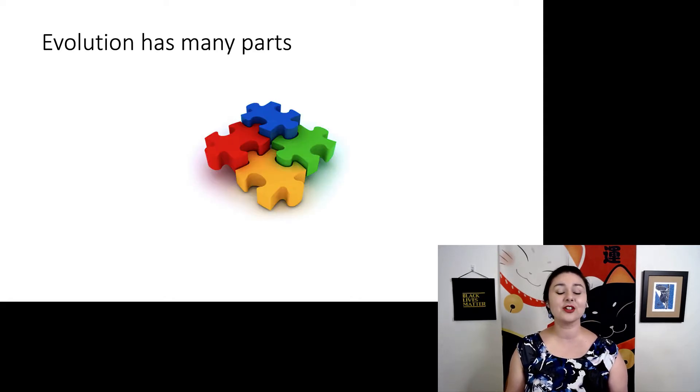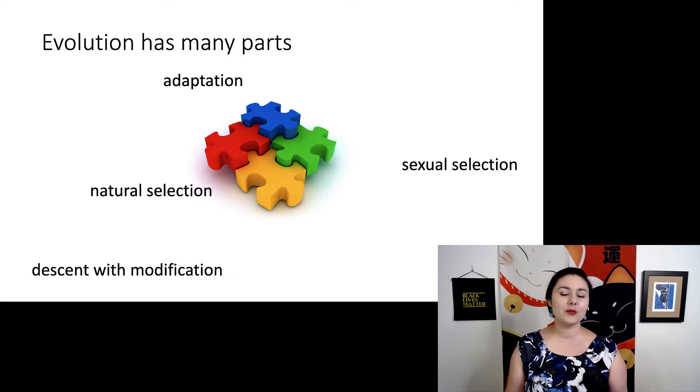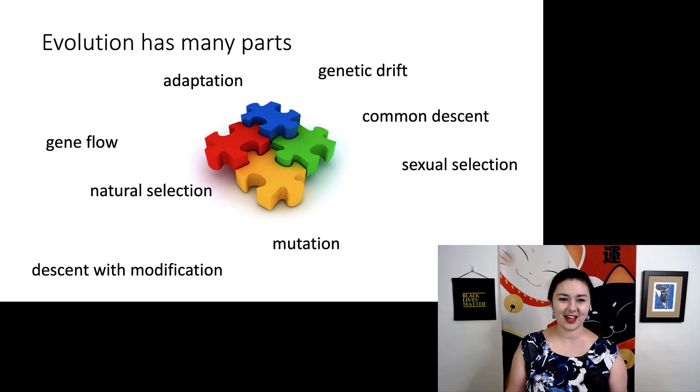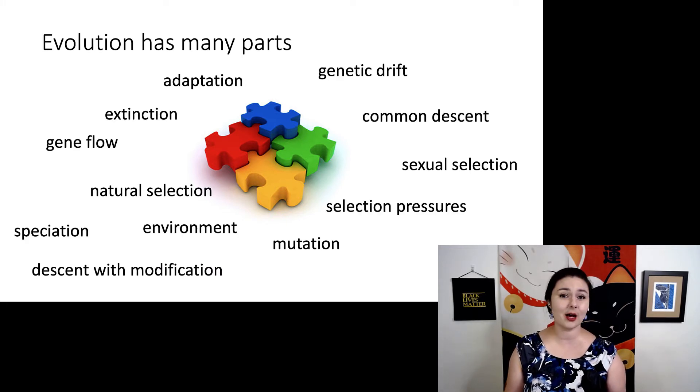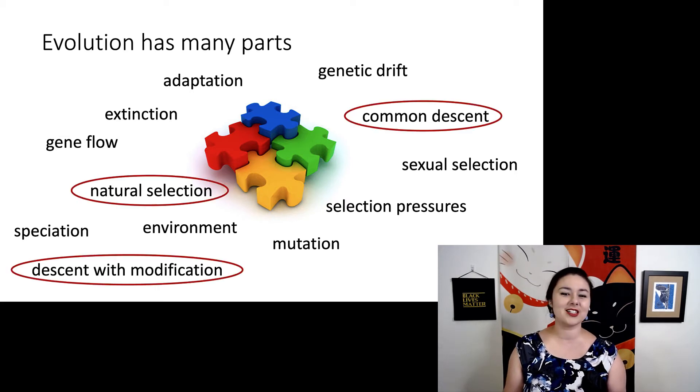But let's remember that there are many different parts within this theory, because evolution is a really big idea. So there are many different things we can look at: adaptation, natural selection, mutation, common descent. We haven't even gotten to all of these yet. These three—common descent, natural selection, and descent with modification—are ones we get straight from Darwin, but other important terms also help us understand evolution.